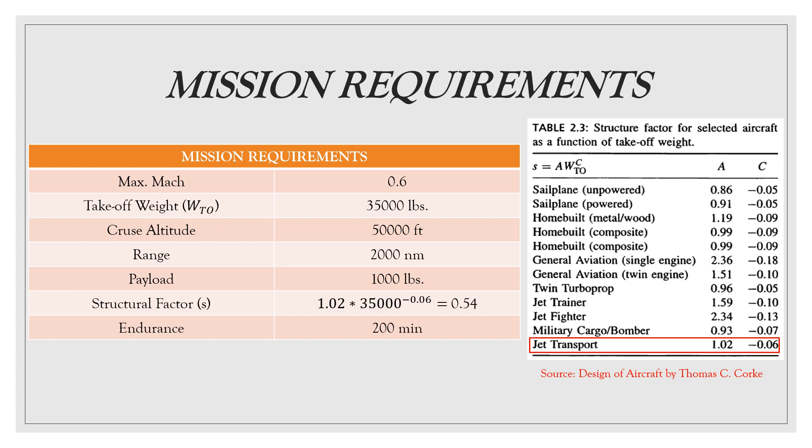Using the data from competitive study and our design proposal, the following considerations can be made. Maximum Mach number of 0.6, take-off weight WTO of 35,000 pounds, cruise altitude of 50,000 feet, range of 2,000 nautical miles, payload of 1,000 pounds, endurance of 200 minutes are considered from historical data and our considerations. Another important fact is structural factor. The expected structural weight for a particular aircraft depends on the type of aircraft. So as we are considering a jet transport aircraft, the values are taken and the structural factor has been found as 0.54. This calculation can be used in the later stage to determine the empty weight of the required aircraft.